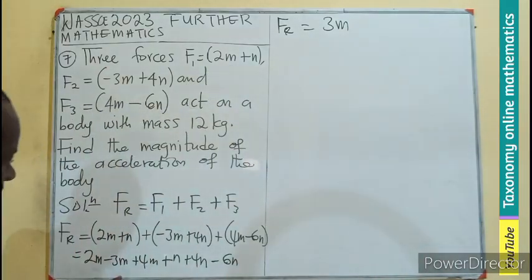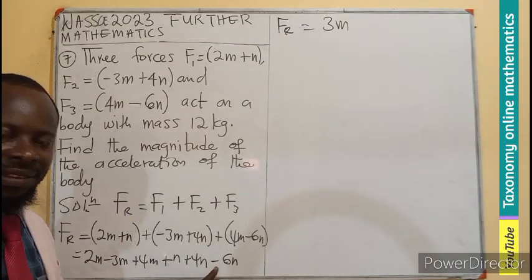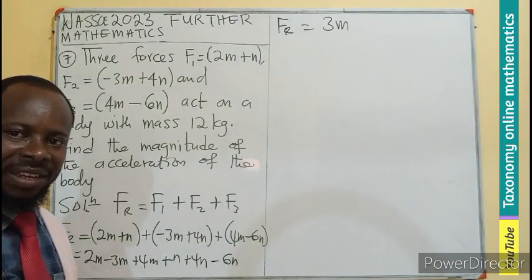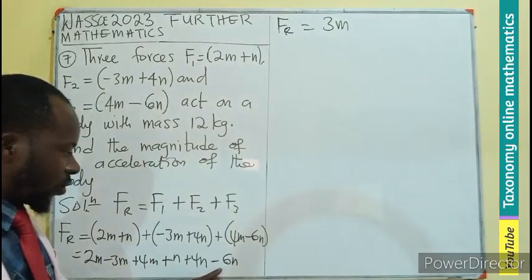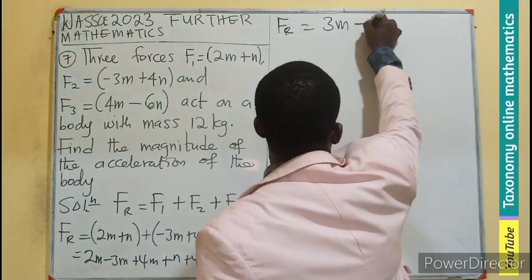Then let's deal with the n. This plus this, I believe will give us 5. 5 minus 6 will give us negative 1. So if that is negative 1, we have it here as negative n.